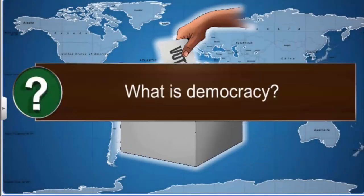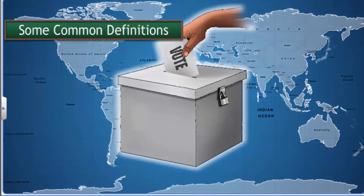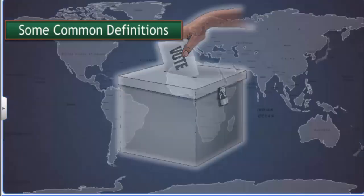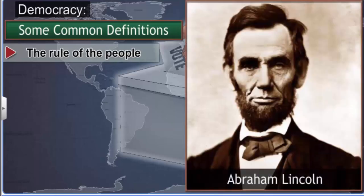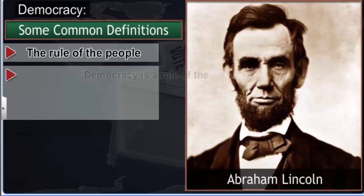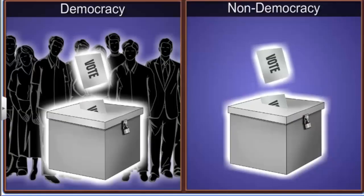What is your understanding of democracy? What does it mean? Let's first look at some commonly known definitions. The word democracy originated from a Greek word meaning 'the rule of the people.' This is in line with Abraham Lincoln's definition: democracy is a rule of the people, by the people, for the people.